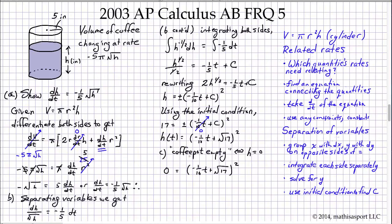And so the question is, when does this quantity equal 0? And so what we have is that 1/10 t has to equal the square root of 17, and therefore t equals 10 times the square root of 17.